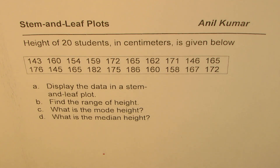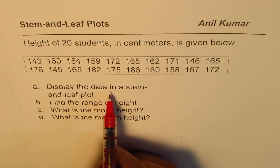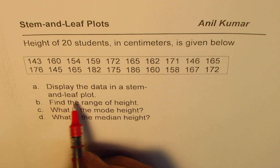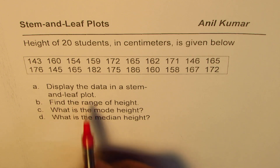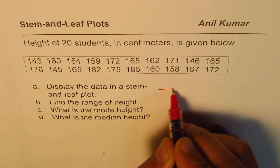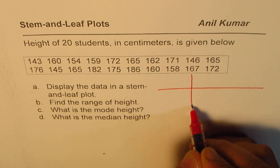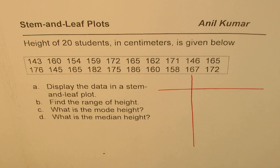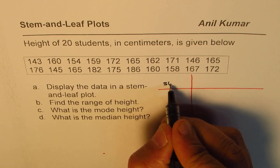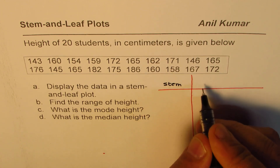You can always pause the video, answer the questions, and then look into my suggestions. Let's begin by displaying the data in a stem and leaf plot. We have two columns basically — the first column we will refer to as stem and the other one as leaf.